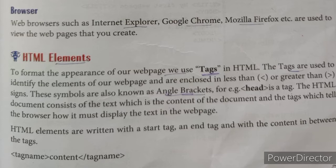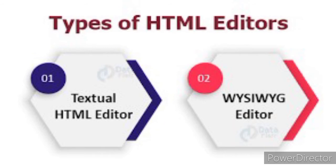Students, next is how to create HTML documents. To create HTML documents, we need two things. First is a text editor — that is Notepad, WordPad, or a WYSIWYG editor, which means What You See Is What You Get editor.